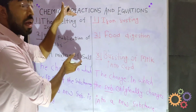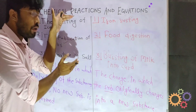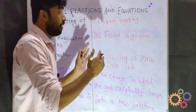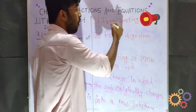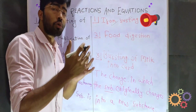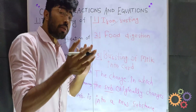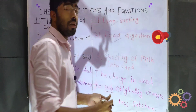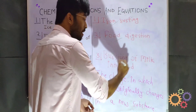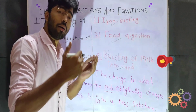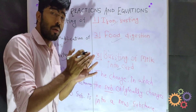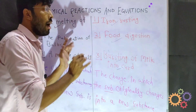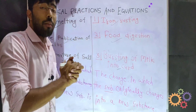If you look at the second set of examples — if you look at iron rust, which is rust, the substance changes. It can be changed. Food digestion — that also cannot be reversed. Bursting of milk into curd — has the curd changed from milk? Can it be converted back to milk? No.